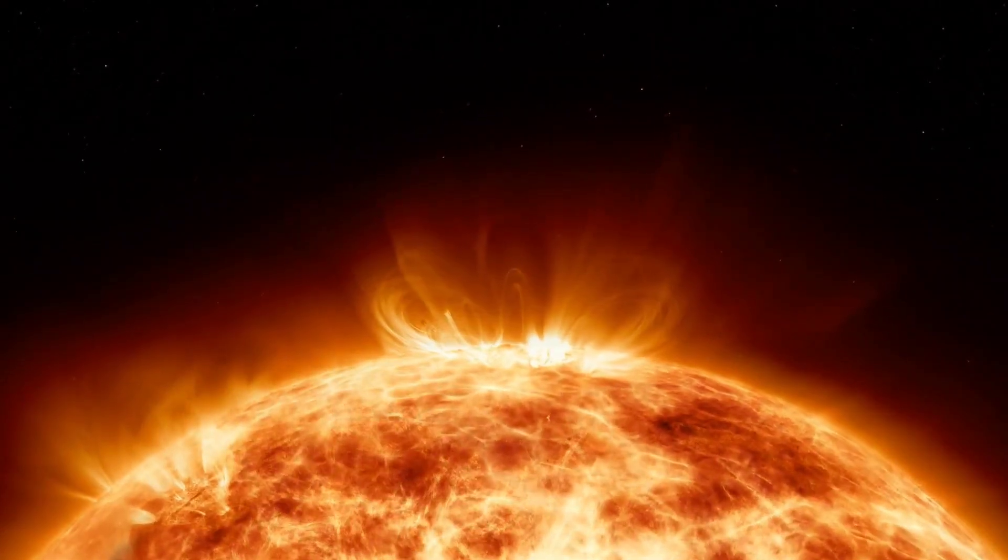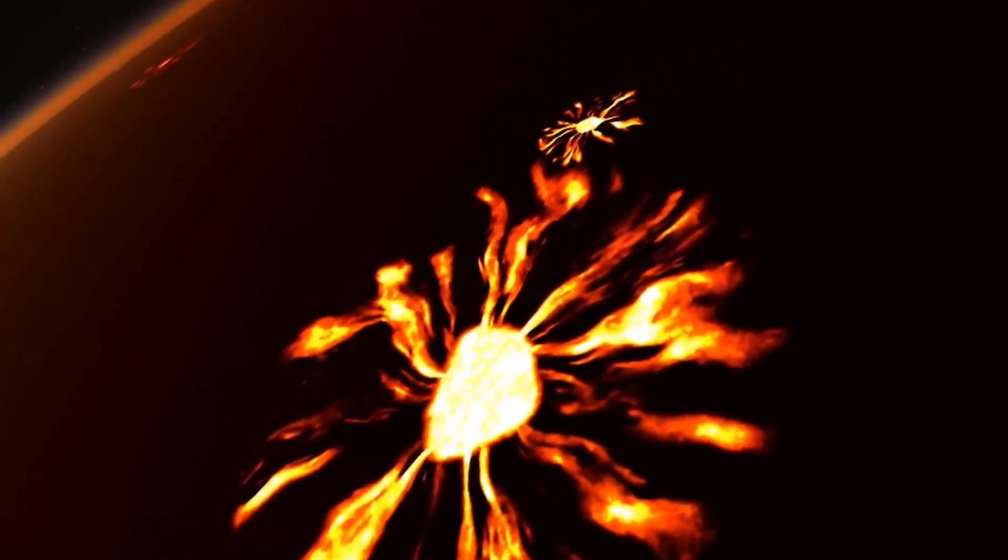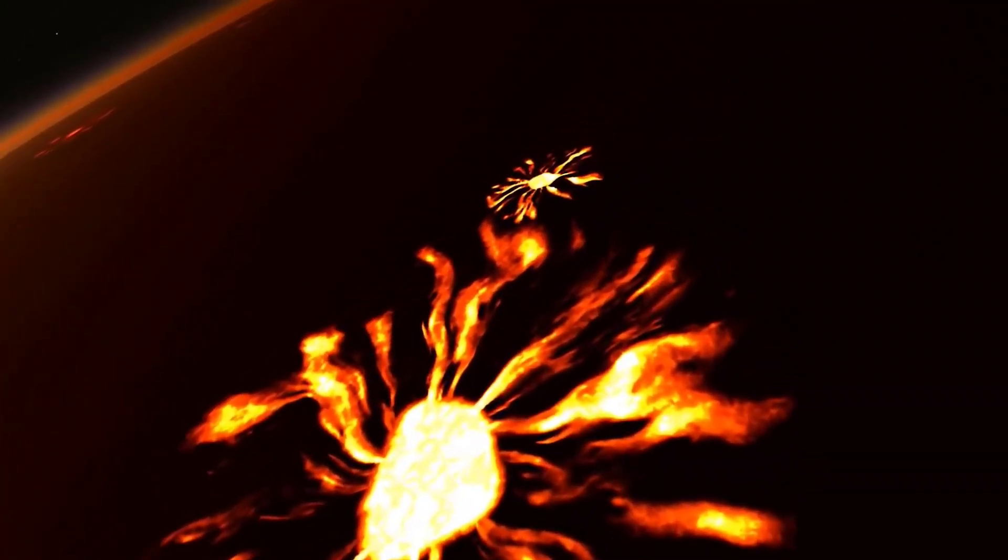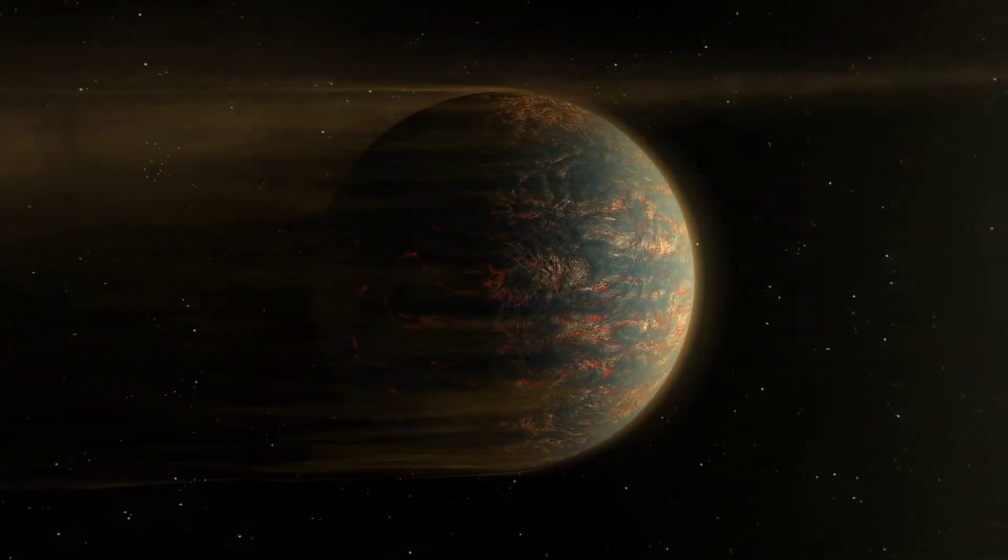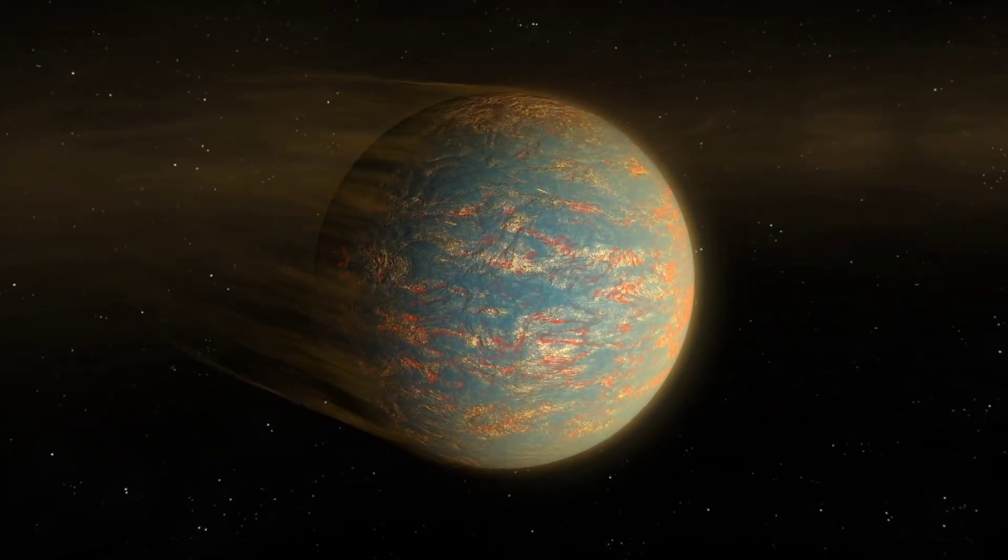As a result, the planet is exposed to extreme radiation and heat, causing its surface to melt and making it inhospitable for life. Moreover, the composition of 55 Cancri e is mostly carbon, with a small amount of nitrogen and oxygen.